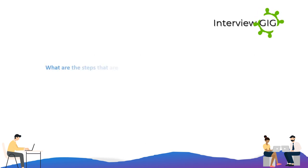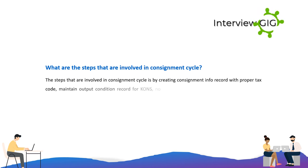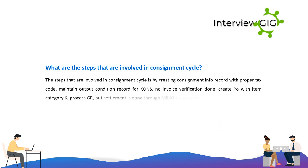What are the steps involved in the consignment cycle? The steps in the consignment cycle are: create a consignment info record with proper tax code, maintain output condition record for consignment, no invoice verification done, create PO with item category K, process GR, and settlement is done through MRKO transaction.